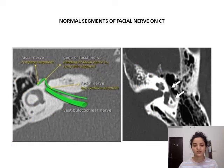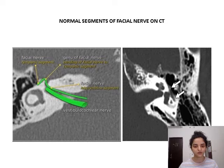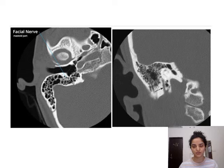On HRCT temporal bone, it is better to take different sections like axial or coronal sections to visualize different segments of the facial nerve. For example, the labyrinthine segment, the first genu, and the tympanic segment of the facial nerve can be very well seen in the axial sections. Whereas the mastoid or vertical segment is better seen in the coronal section, and is not clearly seen in the axial section.